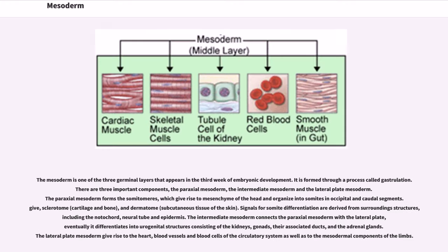The mesoderm is one of the three germinal layers that appears in the third week of embryonic development. It is formed through a process called gastrulation. There are three important components: the paraxial mesoderm, the intermediate mesoderm and the lateral plate mesoderm.